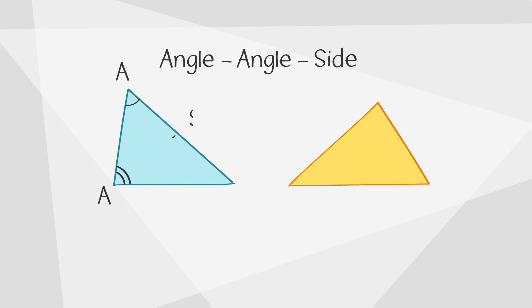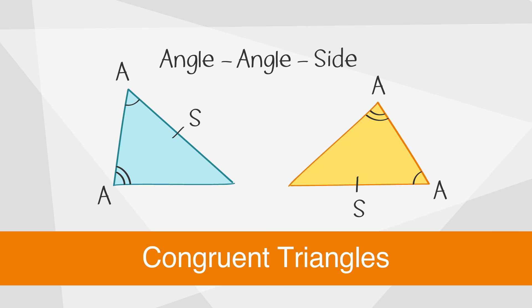Then we have angle angle side which can also be written side angle angle. This theorem states that if two angles and the non-included side of one triangle are congruent to the corresponding parts of another triangle then the two triangles are congruent.